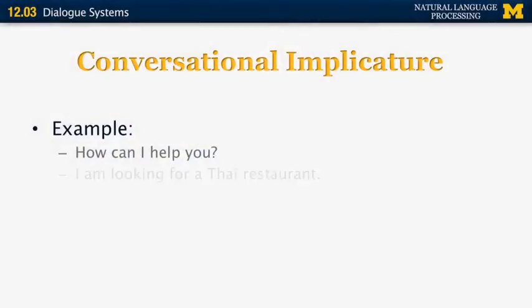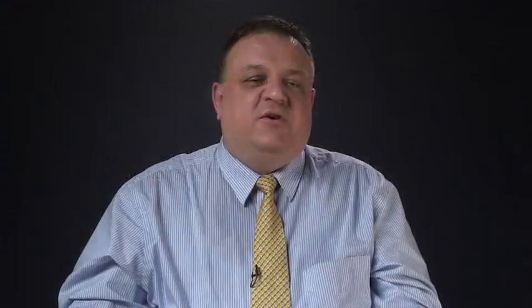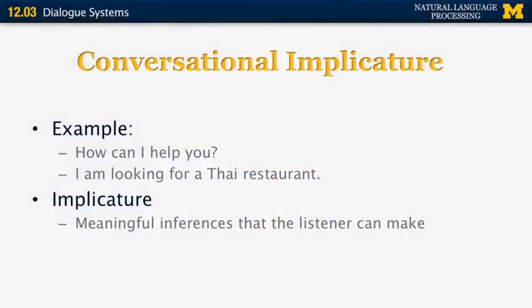Another interesting property of dialogue systems is conversational implicature. In implicature, there is shared information between the participants in the dialogue. For example, if A says 'How can I help you?' and B says 'I'm looking for a Thai restaurant,' it's clear that the first person is willing to help, and the second person is looking for a specific restaurant — probably in the neighborhood where they are. The first person is not going to send them to a Thai restaurant in a different location or to a Mexican restaurant. Implicature refers to meaningful inferences that the listener can make.